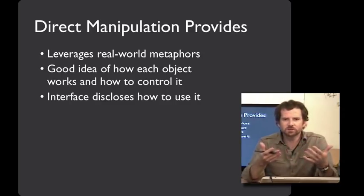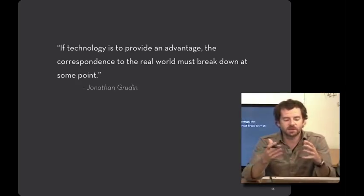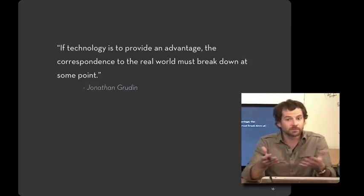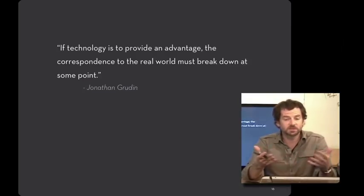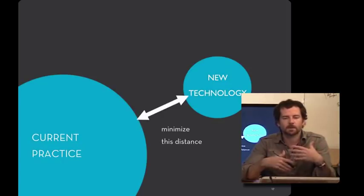The interface's physical form discloses what functionality it provides. But here's the challenge: the reason we have technology and software is that we want to do something new. The reason we have a digital slider instead of a physical slider is that somewhere in the system there's new functionality being offered. As Jonathan Gruden points out, if technology is providing an advantage — if there is new functionality — at some point the correspondence to the real world has to break down. This gap between new technology and current practice is necessarily going to be there, but your goal as a designer is to minimize this distance as much as possible.